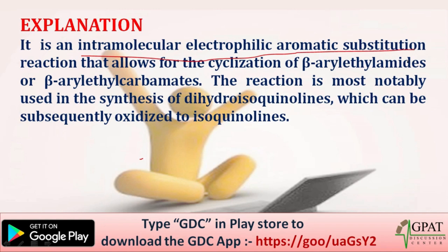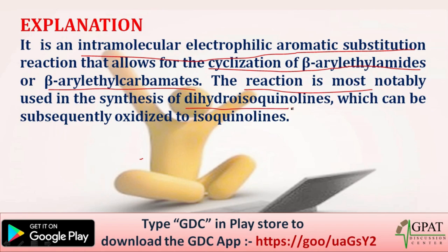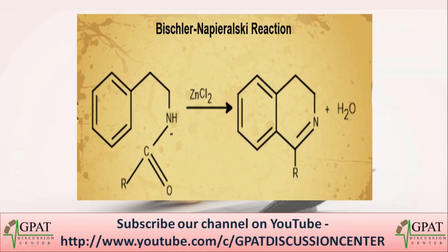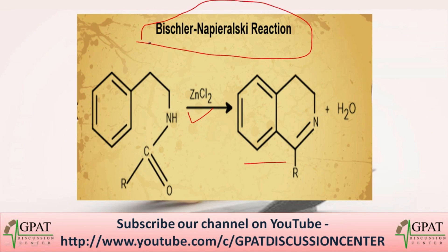It is an intermolecular electrophilic aromatic substitution that allows the cyclization of beta-aryl ethylamide or beta-aryl ethyl carbamides. The reaction is most notably used in the synthesis of dihydroisocoumarinones, which can be subsequently oxidized to isocoumarinones. The reaction uses ZnCl2 to form isocoumarinone.